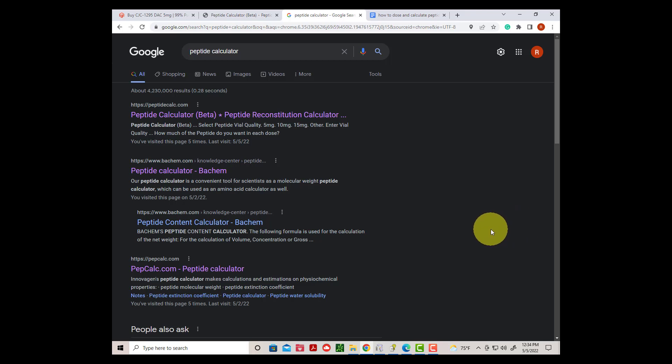The next step would be to search on Google for a peptide calculator. The one on the top of this page was called peptidecalc.com.